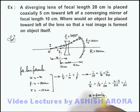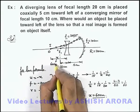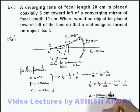That means we are getting the value of x to be 60 centimeters. So in this situation the object must be located at a distance of 60 centimeters from the lens. That is the answer to this problem.